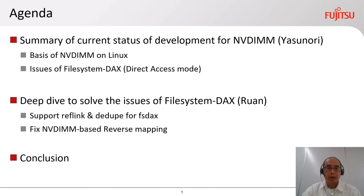Here is the agenda. First, I'd like to talk about the summary of current status of development for NVDIMM — the basis of NVDIMM on Linux and issues of file system DAX, which means direct access mode. Next, Lan-san will talk about a deep dive to solve the issues of file system DAX: support reflink and dedupe for FSDAX, and fix NVDIMM-based reverse mapping. Then I'll finalize with a conclusion.